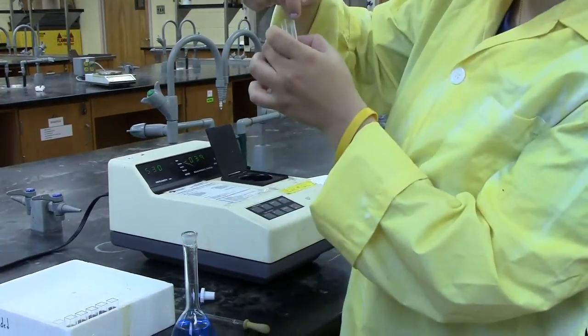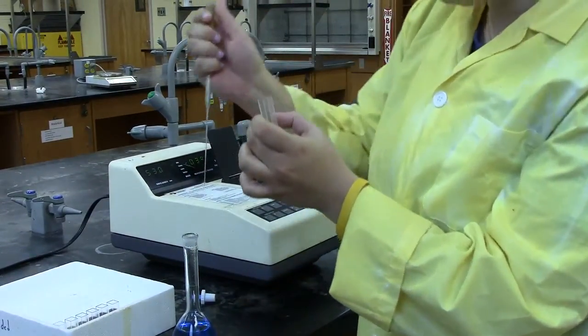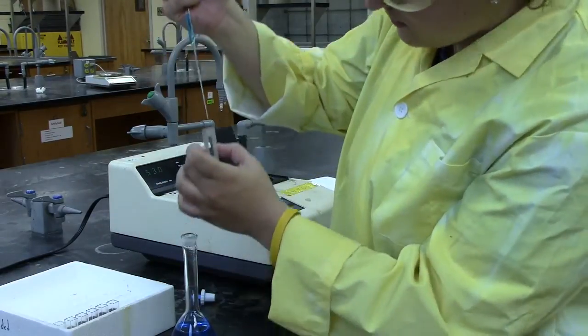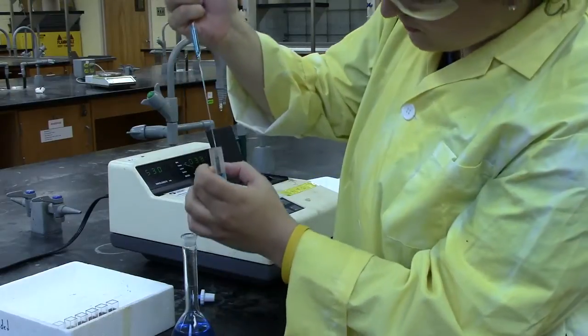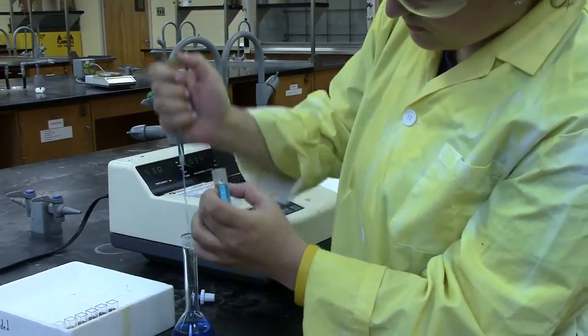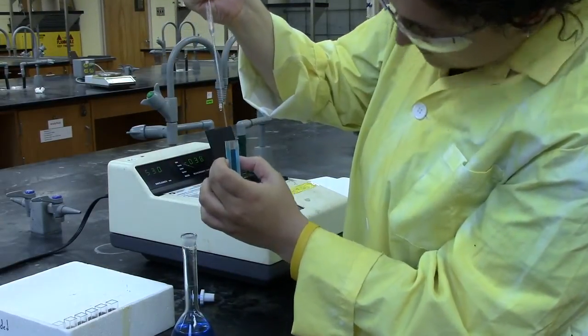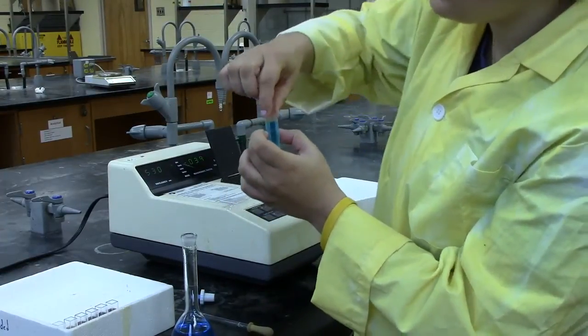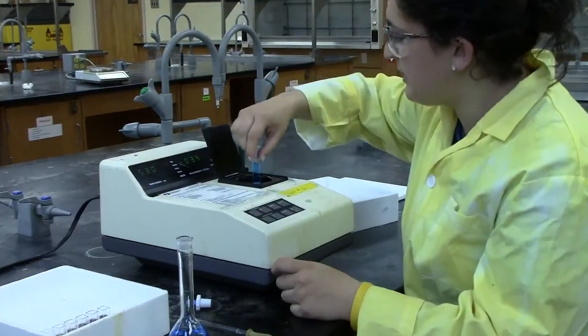There is a line located on the cuvette, which you just want to fill up to that line. You can then insert your unknown sample and it will read the absorbance.